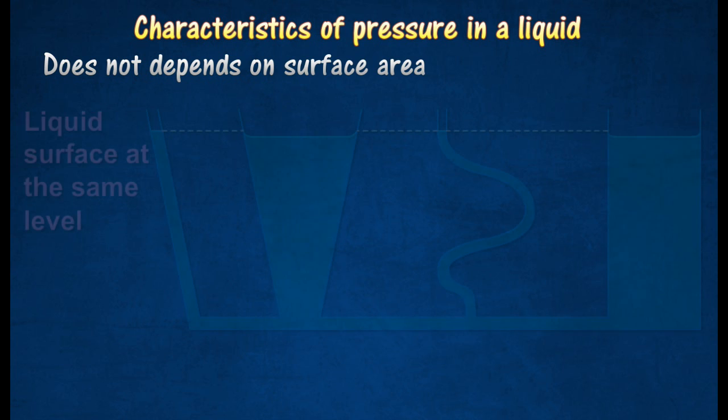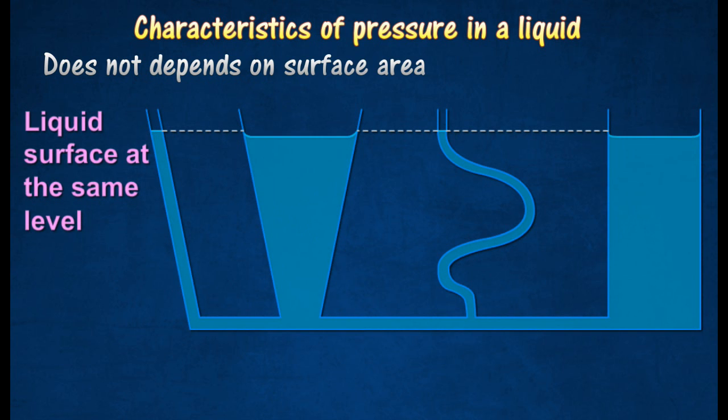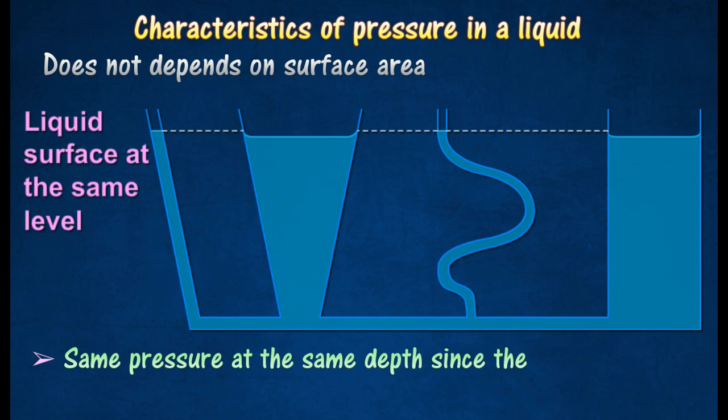The pressure in a liquid is not affected by the surface area. The figure shows that tubes of different shapes and diameters have the same pressure at the same depth since the water level is the same in each tube.